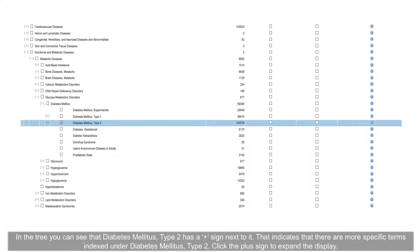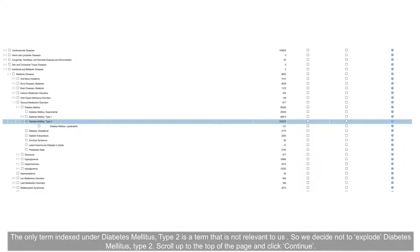Click on the hyperlink term to see where diabetes mellitus type 2 sits in the MeSH tree. In the tree, you can see that diabetes mellitus type 2 has a plus sign next to it, indicating there are more specific terms indexed under it. Click the plus sign to expand the display. The only term indexed under diabetes mellitus type 2 is not relevant to us, so we decide not to explore diabetes mellitus type 2.